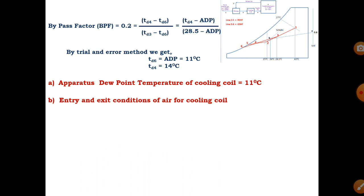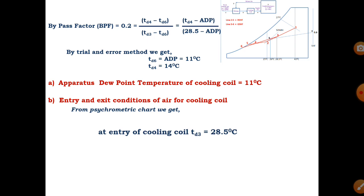Once all values are obtained, the psychrometric part is essentially complete. First answer: Apparatus dew point temperature = 11°C, obtained from trial and error. Second answer: Entry condition of air to cooling coil — TD3 = 28.5°C, TW3 = 20°C (wet bulb). Exit condition from cooling coil — TD4 = 14°C, TW4 = 13°C (wet bulb). These are the entry and exit conditions for air at the cooling coil.